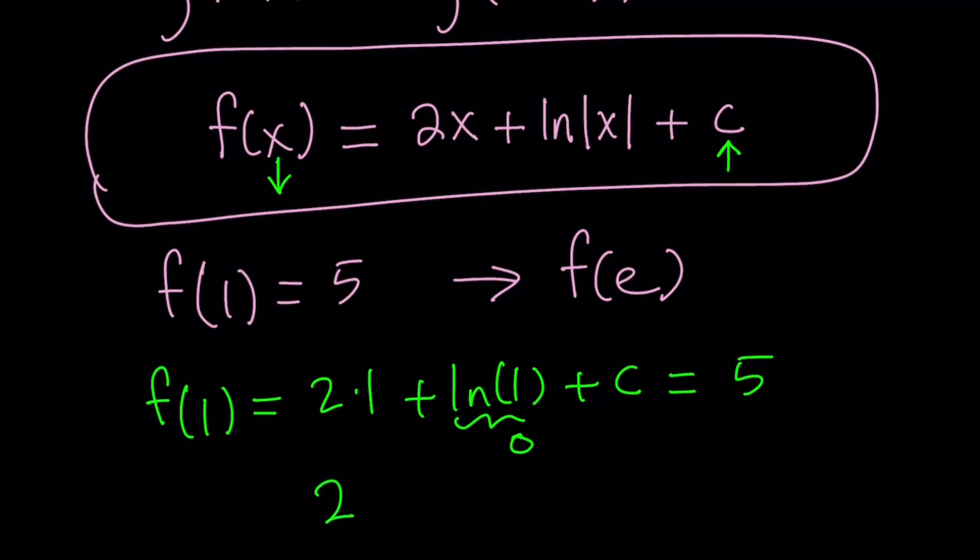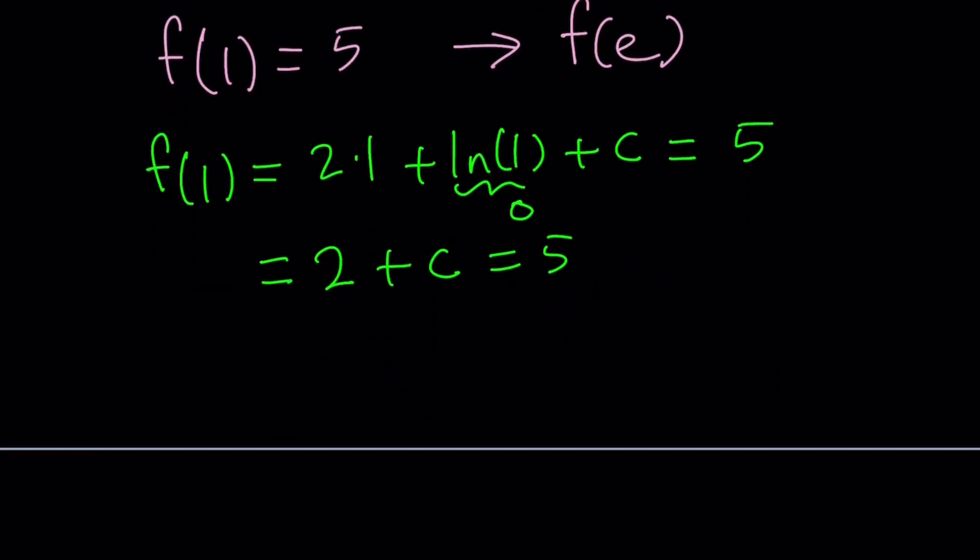And f of 1 is given as 5. So we get 2 plus c equals 5. Hopefully you see what I see. And from here, we get c equals 3.